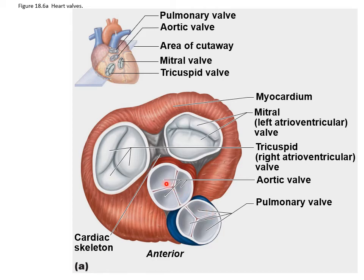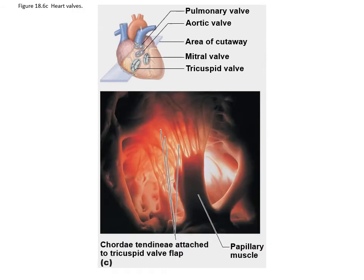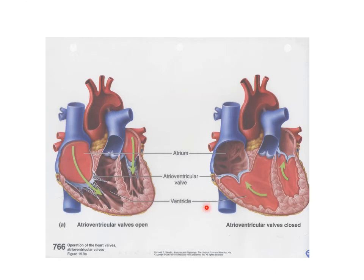Here is a look at the cordae tendinae, showing you the papillary muscle that the valve flap is attached to. When blood comes into the atria by gravity, most of it flows through those valve flaps down into the ventricles — the valve flaps are open and relaxed. Then when these lower chambers contract, the valve flaps move upwards and close off the atria.